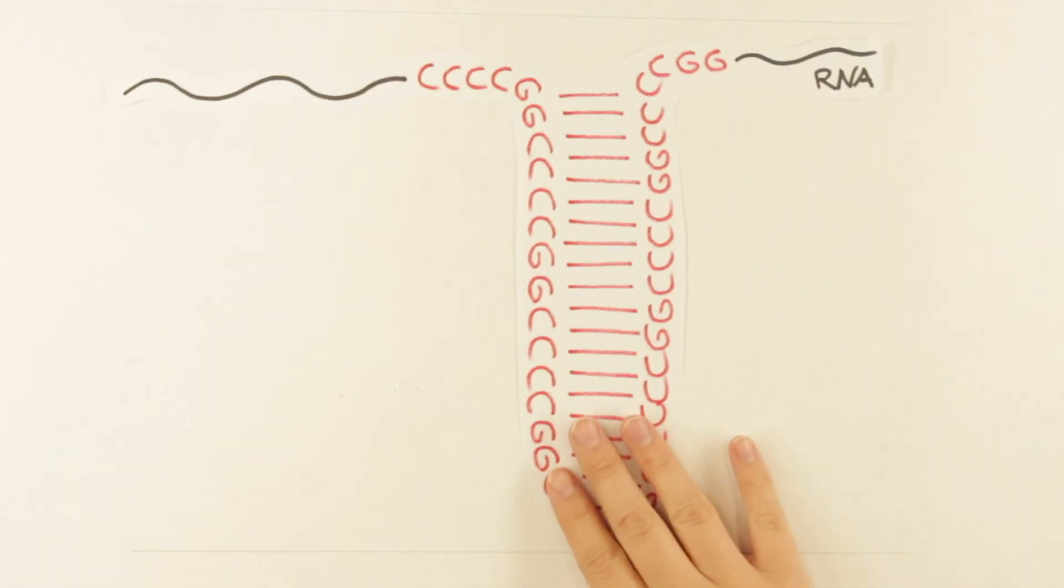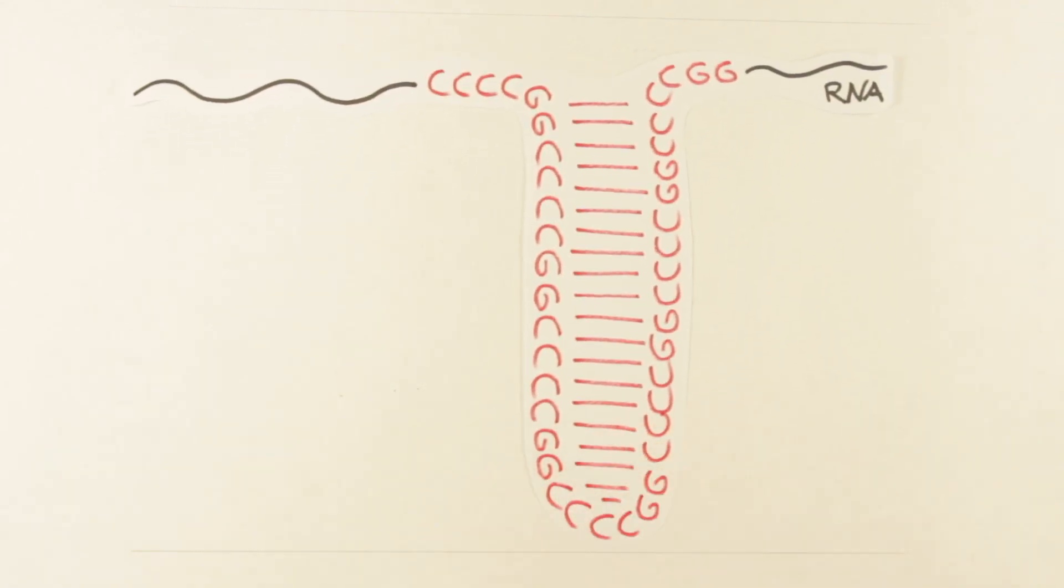To make things even more complicated, these repetitive sequences can be translated in the opposite direction from the antisense RNA strand.